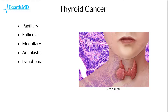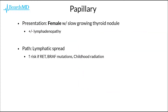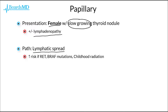Without further ado, let's delve into our first type of thyroid cancer, which is papillary carcinoma of the thyroid. Our classic patient is going to be a female with a slow-growing thyroid nodule. These patients may also present with lymphadenopathy on physical exam, in part because papillary cancer of the thyroid spreads via lymphatic spread. Patients are at increased risk if they have RET or BRAF mutations, or a history of childhood radiation, especially to the neck.